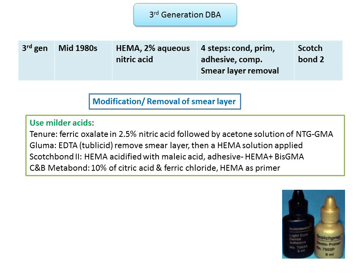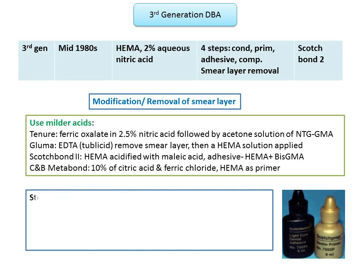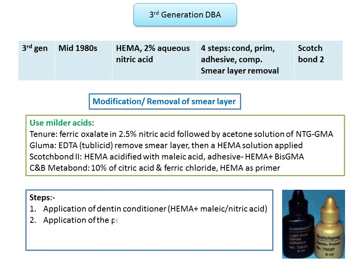The third generation DBA involved four steps for application: first, application of a dentine conditioner including HEMA with malic or nitric acid; second, application of primer; third, application of adhesive in the form of an unfilled resin; and finally, placement of a resin-bonded composite.